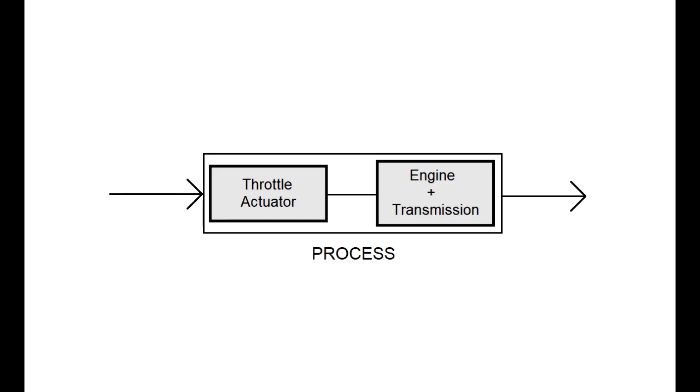Our process consists of a throttle actuator which feeds fuel into the engine. Our input to the system is the angle of the gas pedal and our output is the speed or velocity of our vehicle. The greater the angle the faster the vehicle will go. The smaller the angle the slower the vehicle will go. This is an example of open loop commanding.